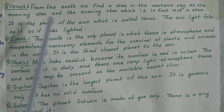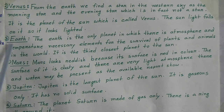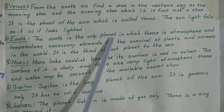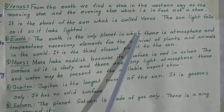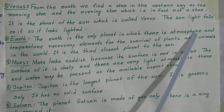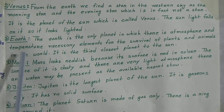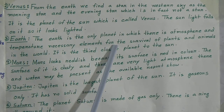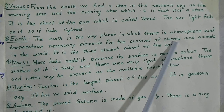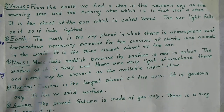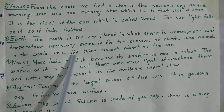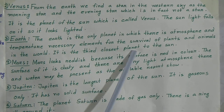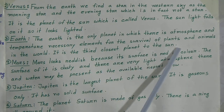Number 3: Earth. The earth is the only planet which has atmosphere and temperature with necessary elements for the survival of plants and animals. It is the third closest planet to the sun.